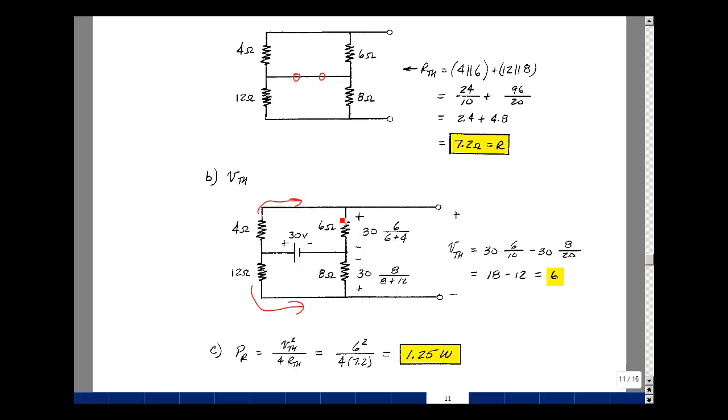So the voltage here would be 30 volts times the 6 ohms over the 6 plus 4, and then the current would be flowing in this direction. We'd have a drop from here to here of 30 volts times 8 over 8 plus 12. That turns out to be 18 and 12. I'm going to subtract those two and get 6.